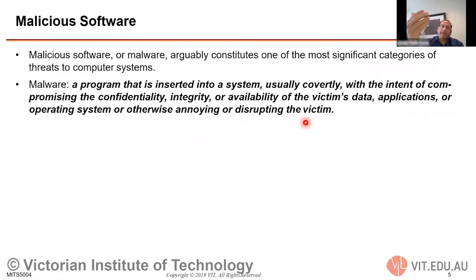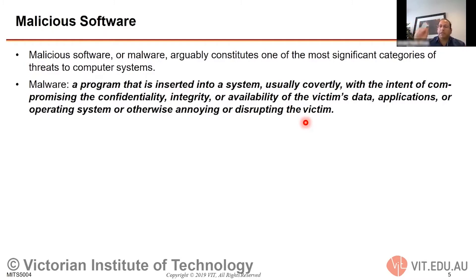Self-contained programs can further be classified as replicating programs — when executed, they produce one or more copies of themselves to be activated and spread at a later time. Others are non-replicating: they do not make copies but still cause harm to your computer, system, and network. Generally, non-replicating programs are installed on servers, while replicating self-contained malware is installed on computer systems.